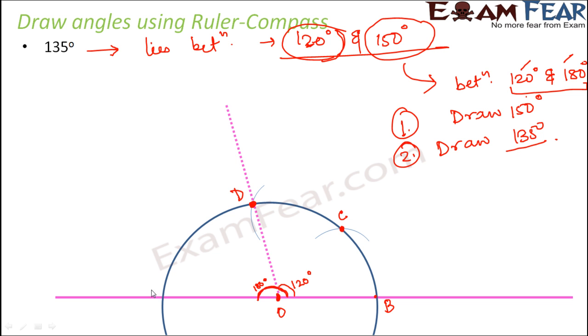So that means this point corresponds to 120 and this point corresponds to 180. So let us call this point as E. So somewhere exactly between point D and E would lie angle 150 degree. That is our step number one. So let us do that.